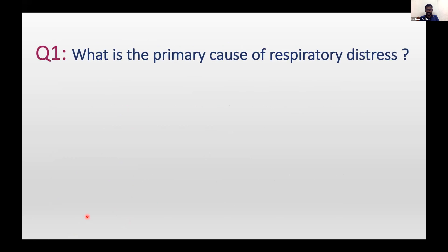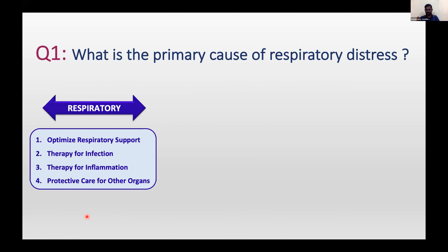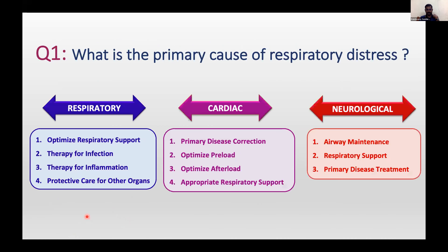What is the primary cause of respiratory distress? There are three types: respiratory, cardiac, and neurological. The support therapy for each is different, and respiratory support is not the only therapy. For a respiratory cause, you optimize respiratory support but also treat infection and inflammation, and protective care for other organs is equally important. For a cardiac cause, primary disease correction, optimizing preload, and afterload reduction become important. For a neurological cause, airway maintenance and respiratory support are hugely important and lifesaving, but primary disease treatment is also critical.